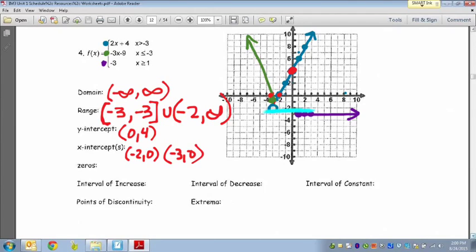For the zeros, we need the actual x values where it crosses, not the ordered pairs but the x values. So the zeros are at negative 3 and negative 2. Those are the two x values where the graph crosses the x-axis.